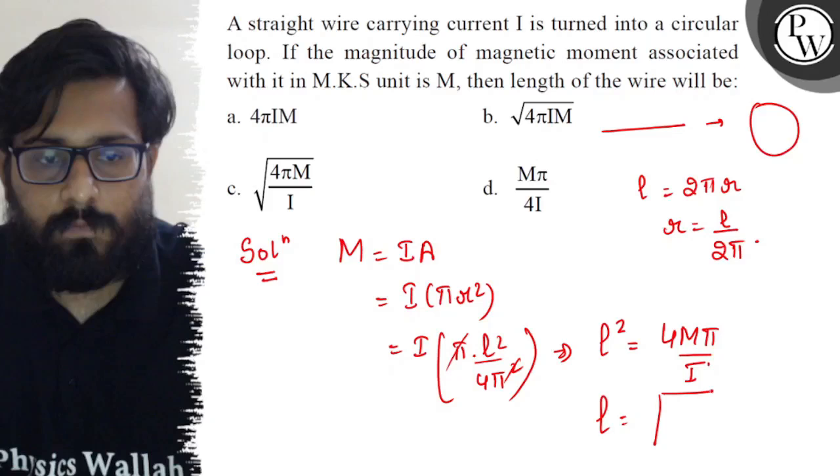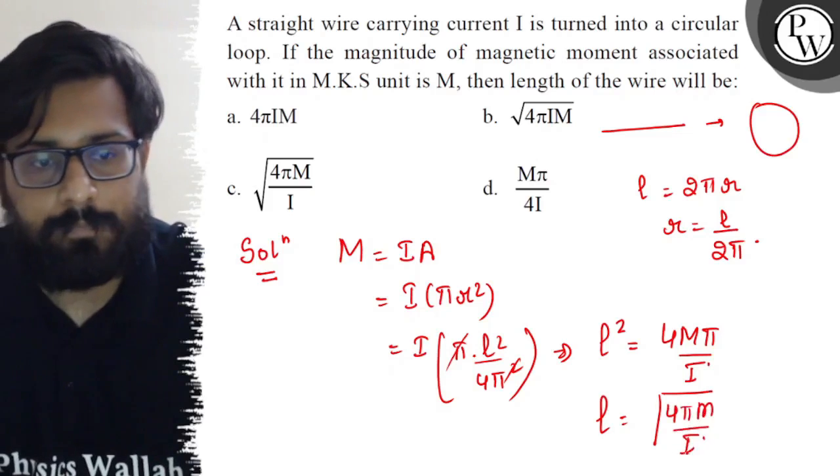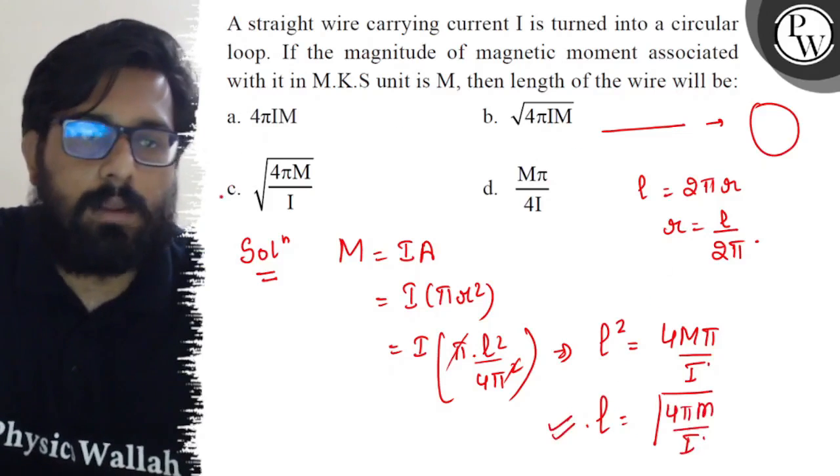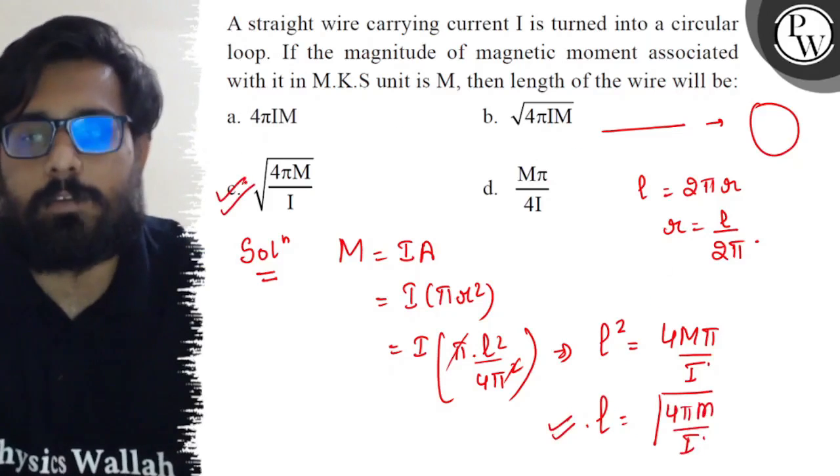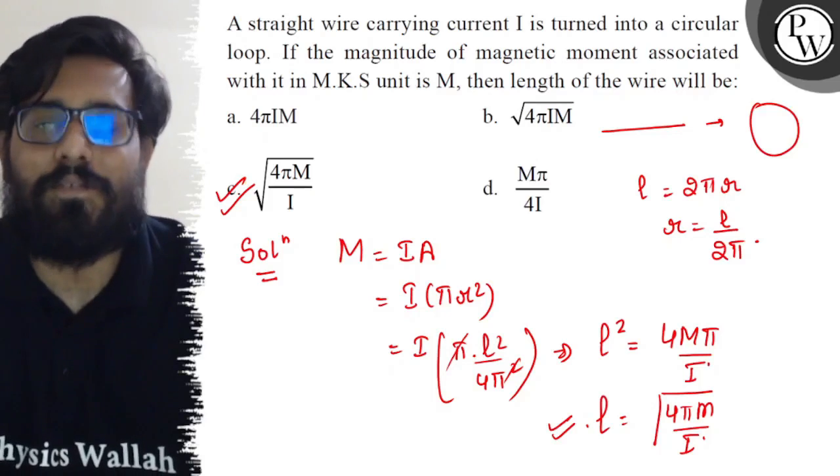So the value of L comes out to be √(4πM/I). So this is your final value of the length. Your option C is absolutely correct. So I hope you got the concept of this question. All the very best to you.